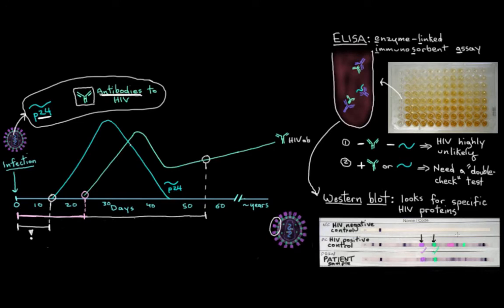And we also look for specific proteins that HIV makes. For example, some of its enzymes like its reverse transcriptase or its integrase. The Western blot test is just a double-check that can detect for actual viral proteins to make sure it's HIV and not something else that's giving you a positive ELISA test result.